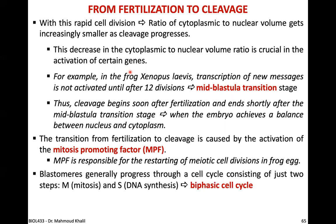MPF is responsible for restarting meiotic cell division in frog eggs. Blastomeres progress through a cell cycle consisting of just two phases — M and S — with no G1 or G2. This is called a biphasic cell cycle.